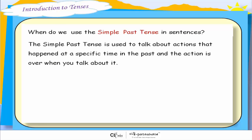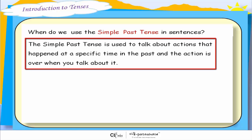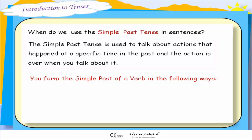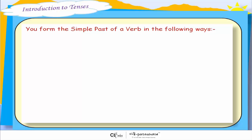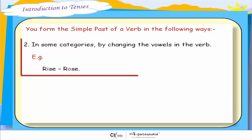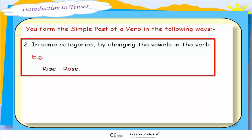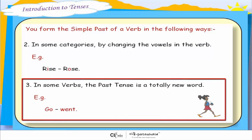When do we use the simple past tense in sentences? The simple past tense is used to talk about actions that happened at a specific time in the past, and the action is over when you talk about it. You form the simple past of a verb in the following ways: in some categories, by changing the vowels in the verbs — for example, 'rise' becomes 'rose' in the past tense. In some verbs, the past tense is a totally new word — for example, 'go' becomes 'went.'